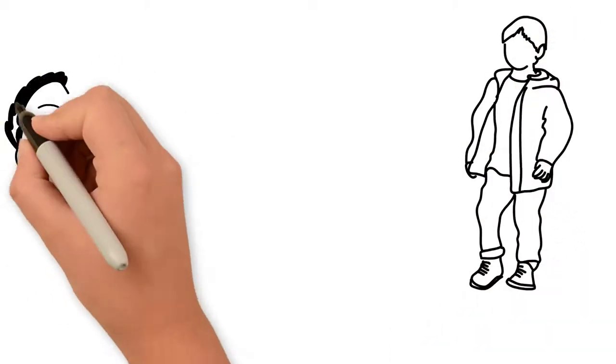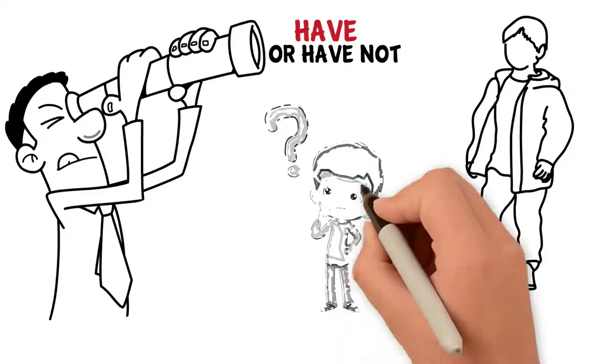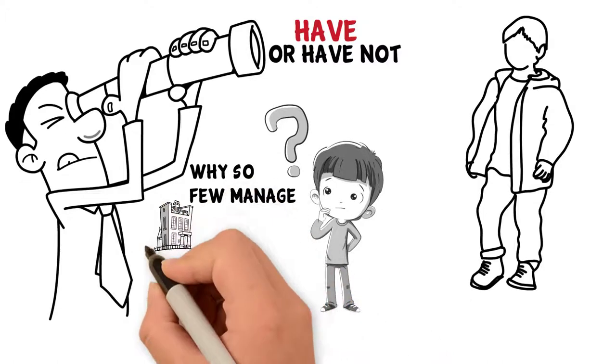As a kid, I always wondered what invisible something divided the haves and the have-nots. Being a have-not, I was curious why so few manage to have everything they desire and others struggle to get by.